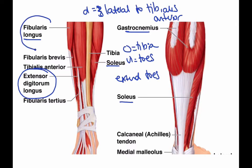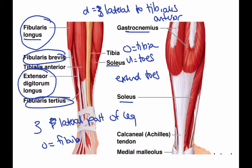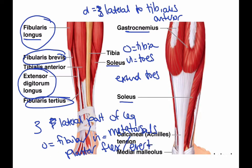Then we get into the fibularis muscles, which are a group of three: fibularis longus, brevis, and tertius. These are also movement at the foot. They form the lateral part of the leg. The origin is the fibula and the insertion is the metatarsals. These help to plantar flex the foot and also to evert the foot.